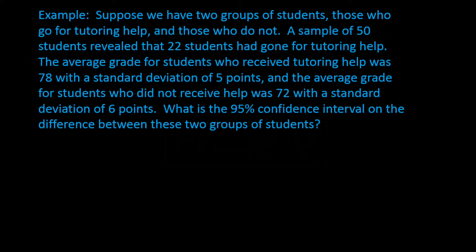First, we need to determine what we are doing: drawing a confidence interval or testing a hypothesis. We're not trying to prove anything here, so this is not a hypothesis test — the question clearly asks to create a 95% confidence interval. We can also see there are two groups, so we have two population means. Finally, since it says 'a sample of 50 students,' the standard deviation is from the sample, so this is the case of sigma unknown.